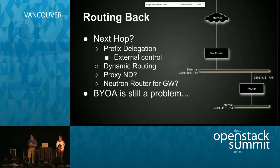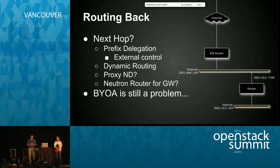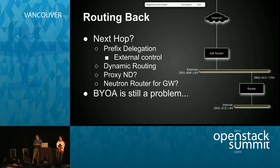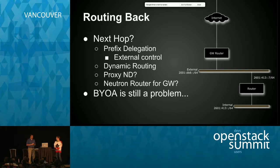Prefix delegation was pretty close for Kilo but didn't quite make it — I expect it'll be ready for Liberty. Dynamic routing is another option: if we can get Neutron to speak a routing protocol to the external world and give it some hints — 'this is how you get back to me, this internal network is behind that router right there, that's your next hop.' There's also proxy neighbor discovery and creating a Neutron router with static routes — those are all possibilities.